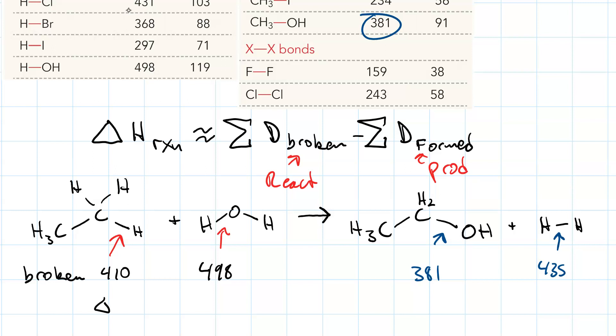So ΔH equals 410 plus 498 minus 381 minus 435, which gives us a positive number, 92 kJ for this reaction. This means it is endothermic.